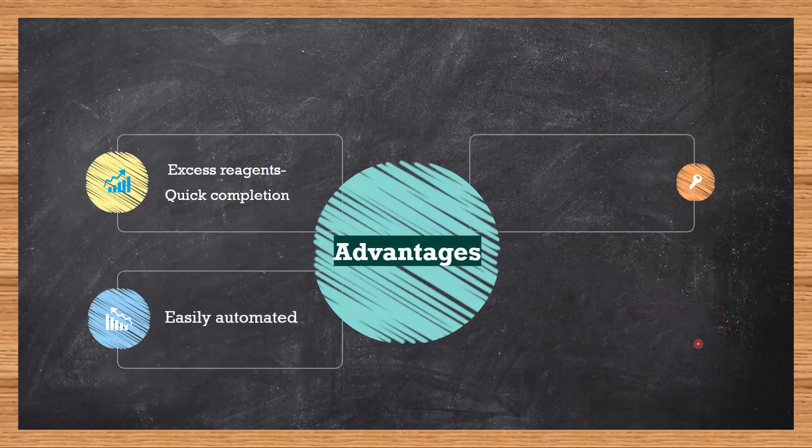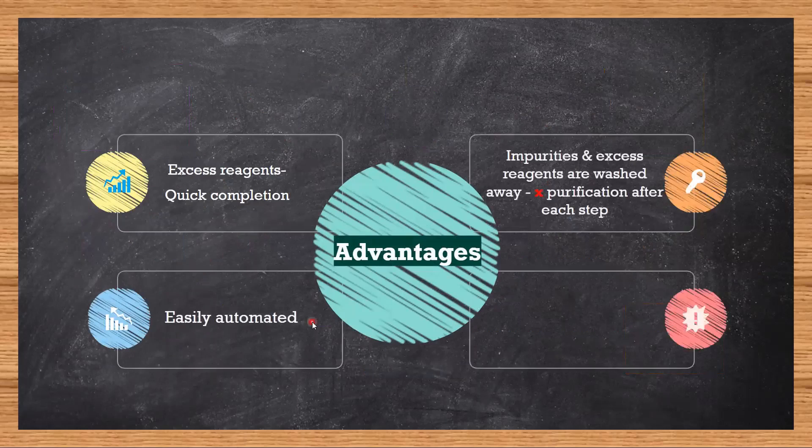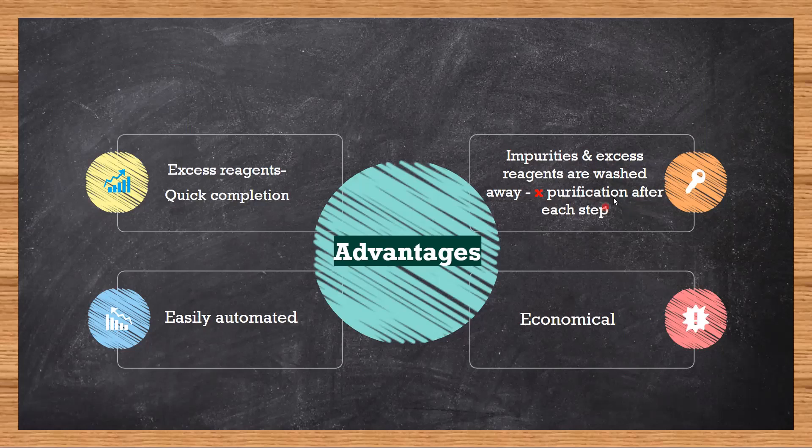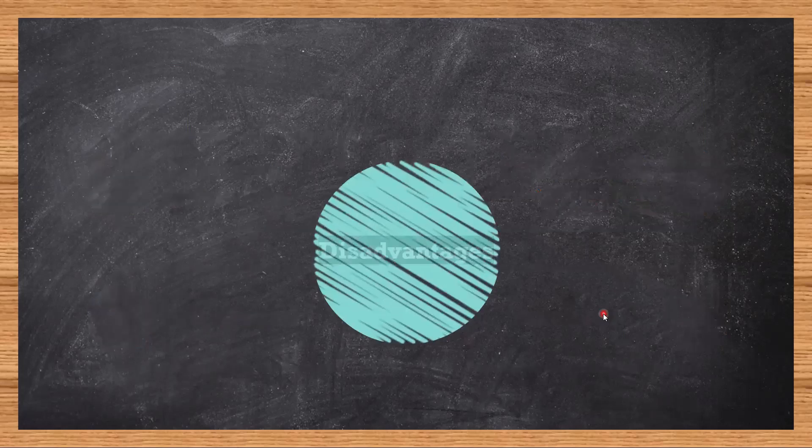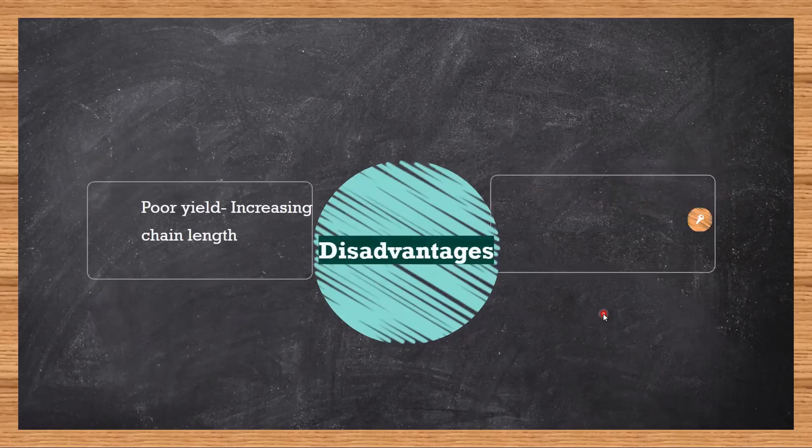What are the advantages of using this method? It is an easily automated process. All the additions are done by a machine. Excess reagents are used so the reaction is driven to completion quite fast. Impurities and excess reagents are washed away, therefore you don't need to do any purification after each step, and it is very economical.